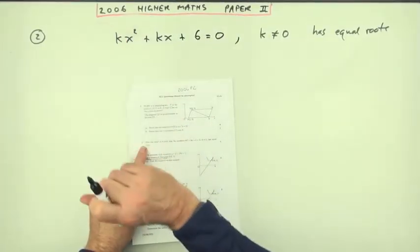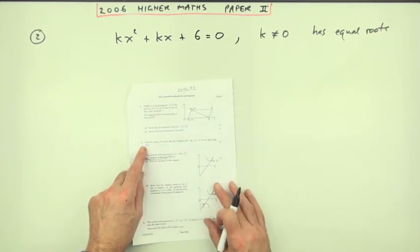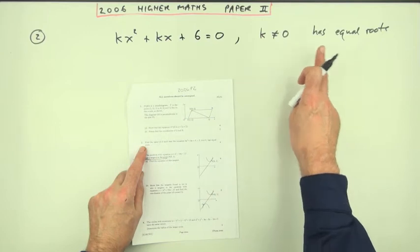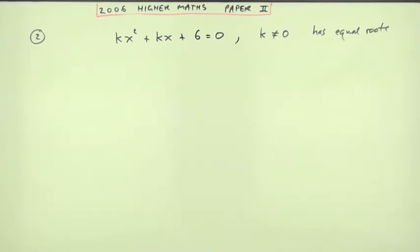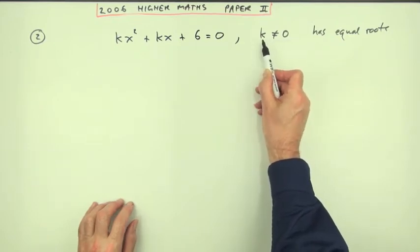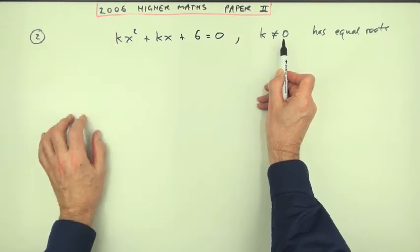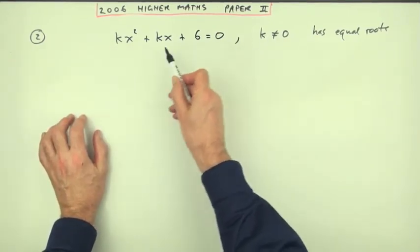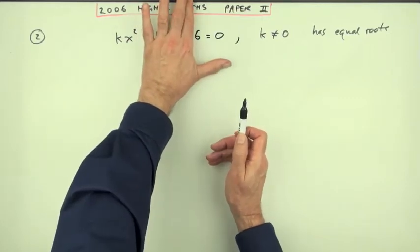Number two from the 2006 Higher Maths Paper II. Roots of a quadratic, four marks. Find the value of k so that this has equal roots. Notice straight away it says k not equal to zero. Normally that would be if k was zero, you wouldn't have a quadratic in the first place. Also if k is zero in this case, all you're left with is 6 equals 0, which is nonsense. Clearly k couldn't equal zero.